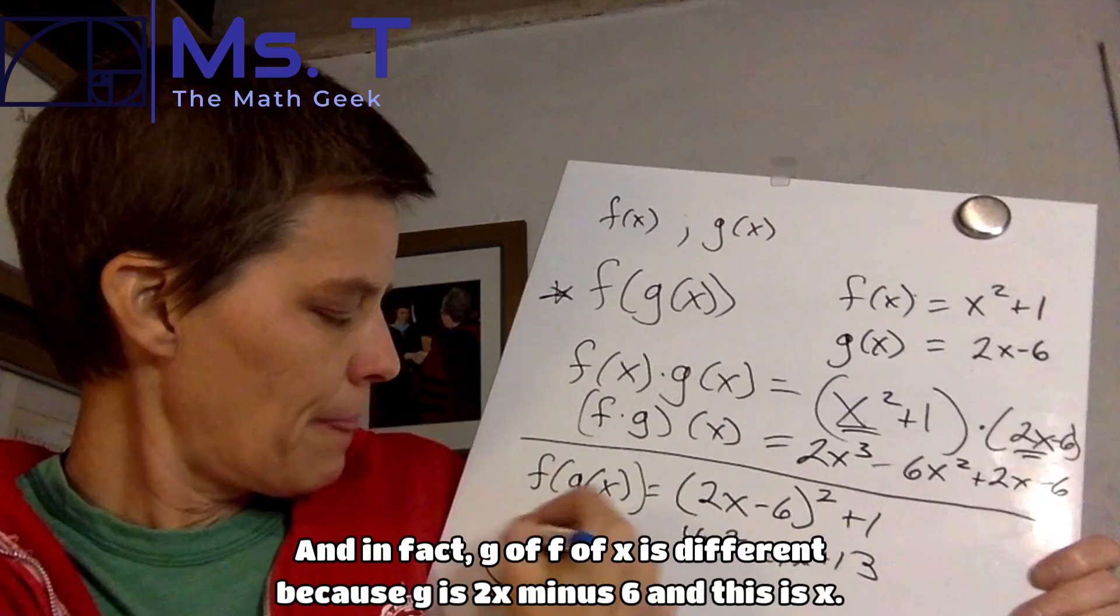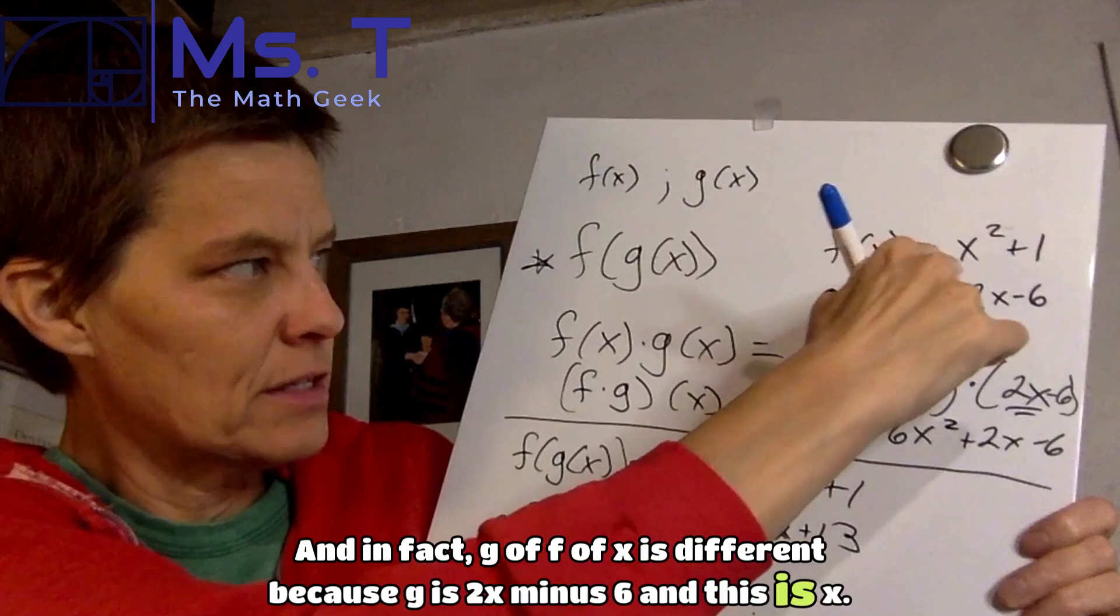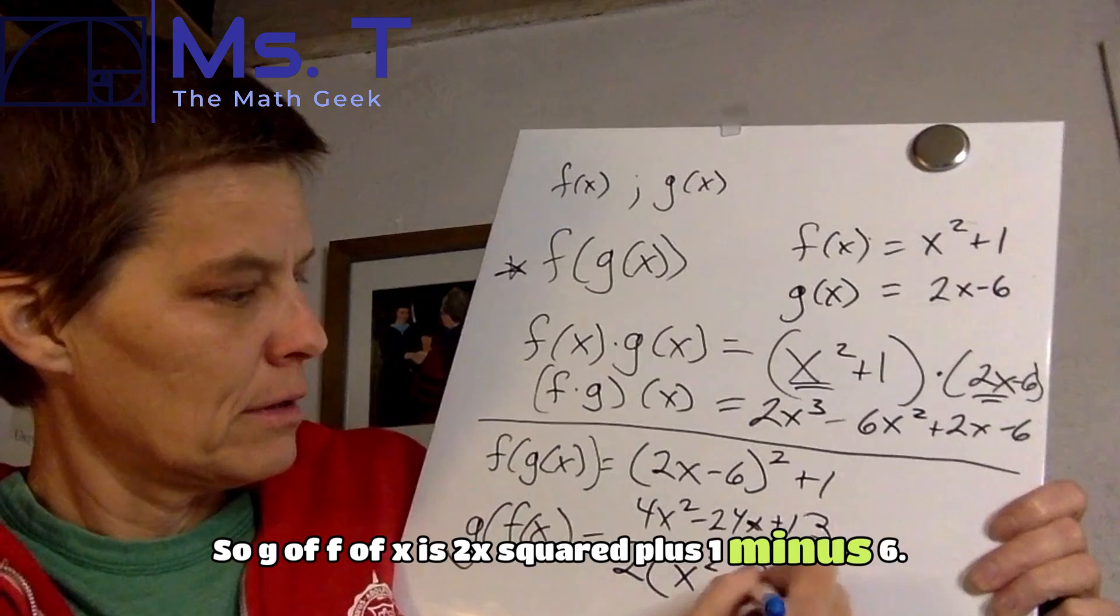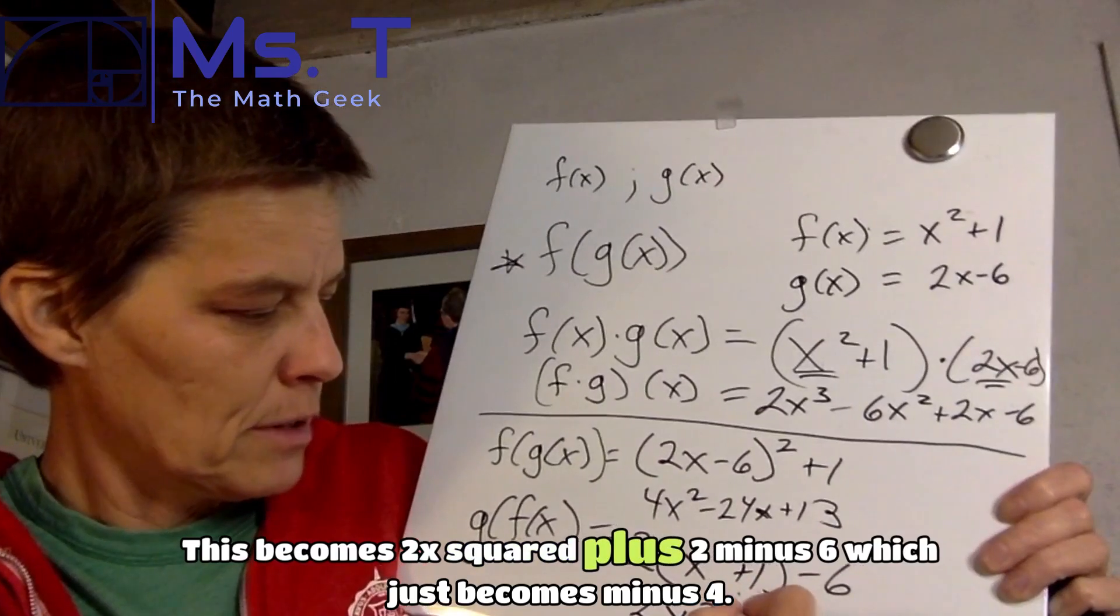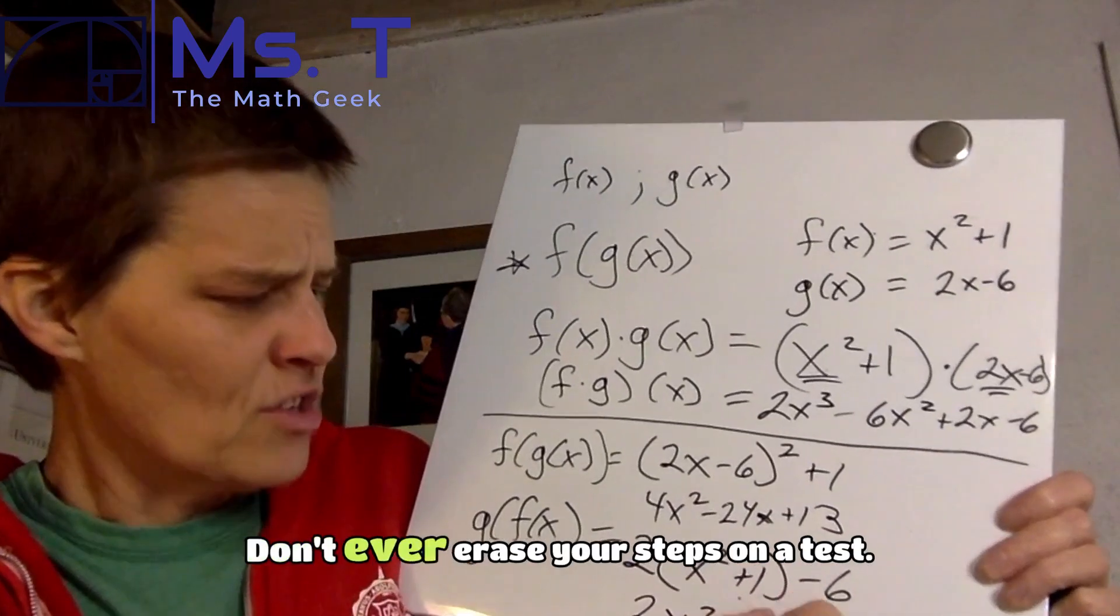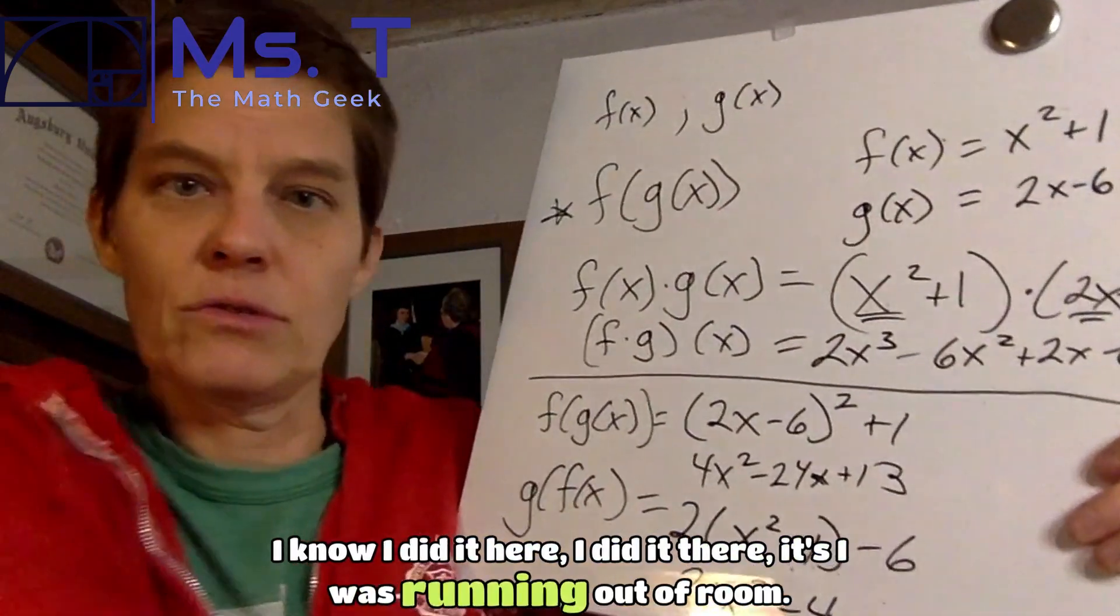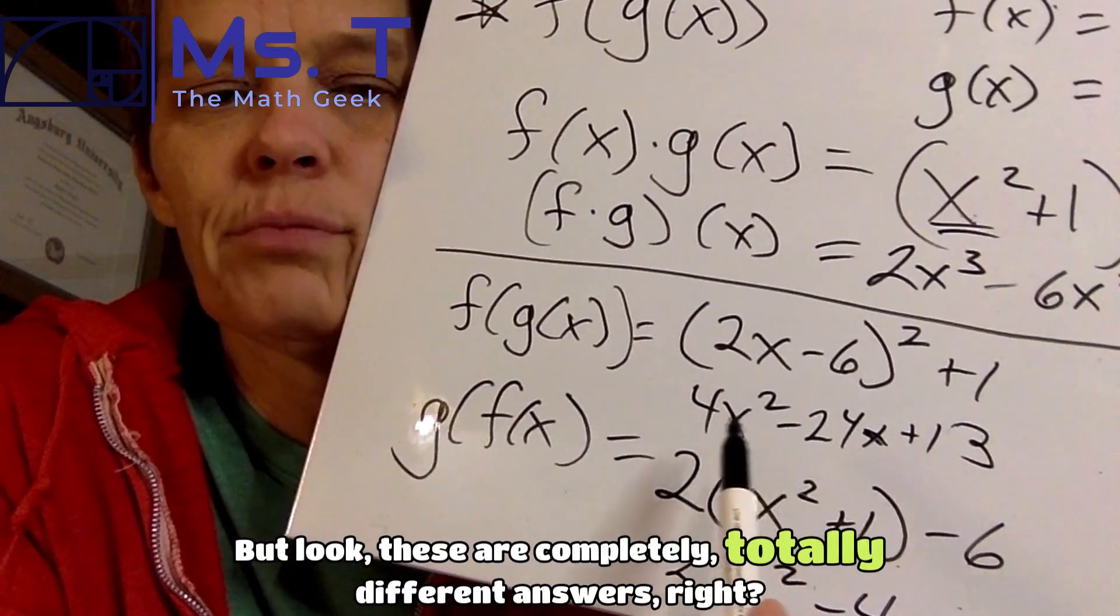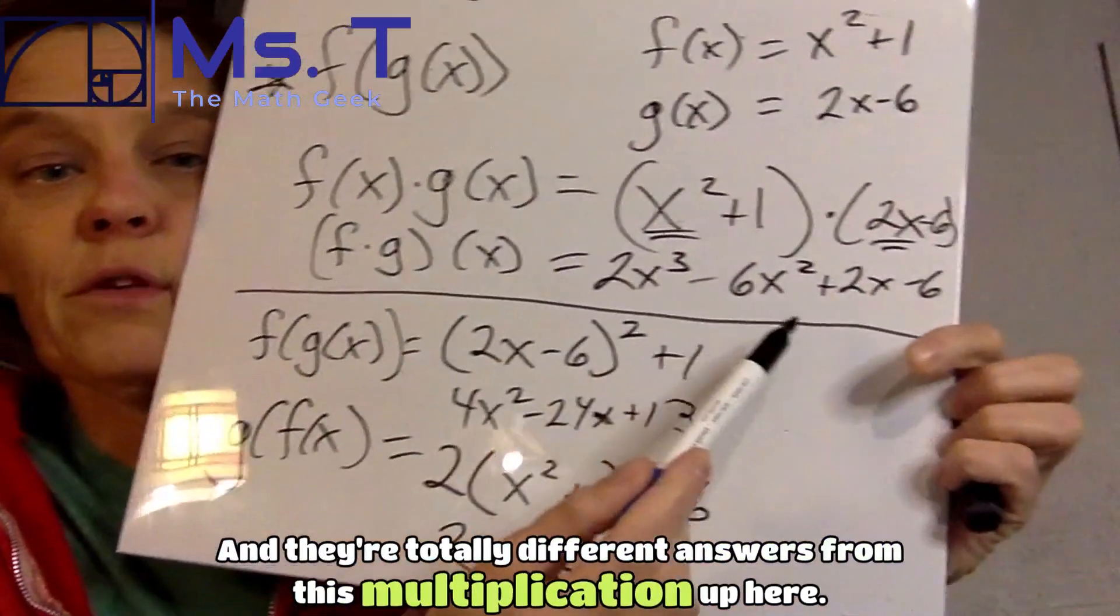And in fact, g of f of x is different because g is 2x minus 6. And this is x. So g of f of x is 2 times x squared plus 1 minus 6. Do you see it? This becomes 2x squared plus 2 minus 6, which just becomes 2x squared minus 4. Don't ever erase your steps on a test like I just did there. Don't ever do it. I know I did it here. I did it there. It's because I was running out of room. In the judgment column, which is more important, having them side by side or erasing, I judged. But look, these are completely, totally different answers, right? f of g of x, g of f of x. And they're totally different answers from this multiplication up here.